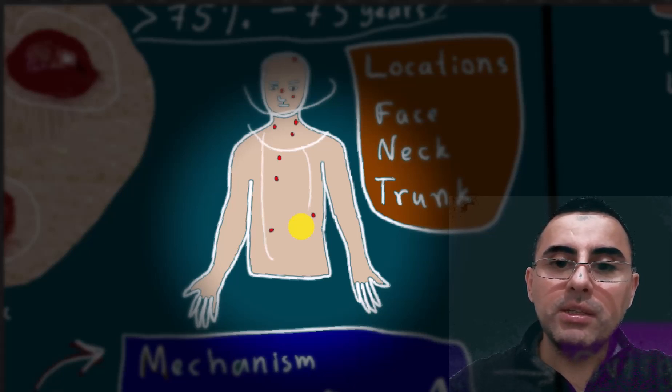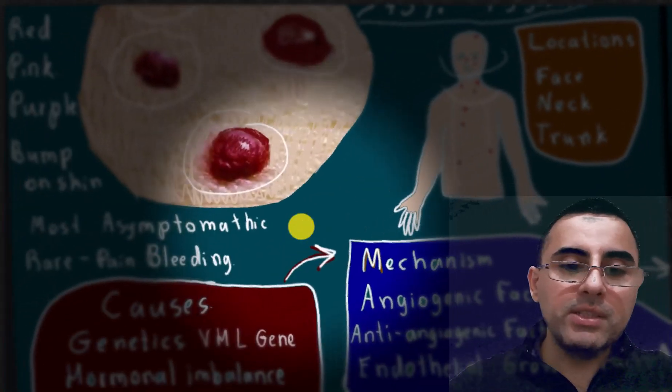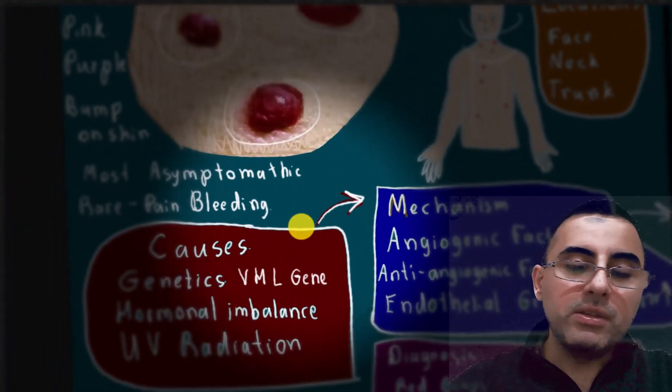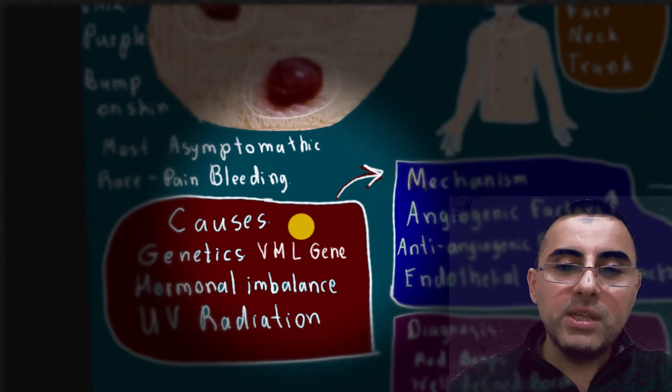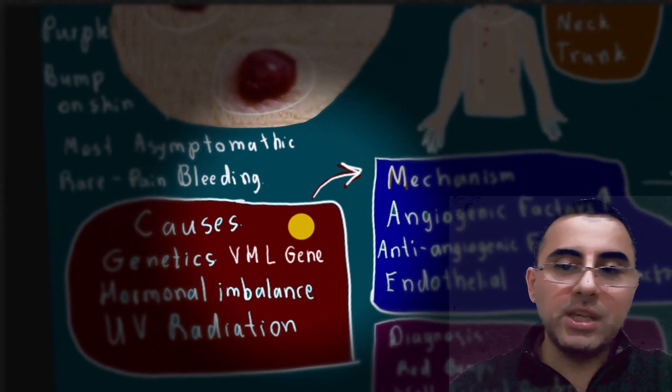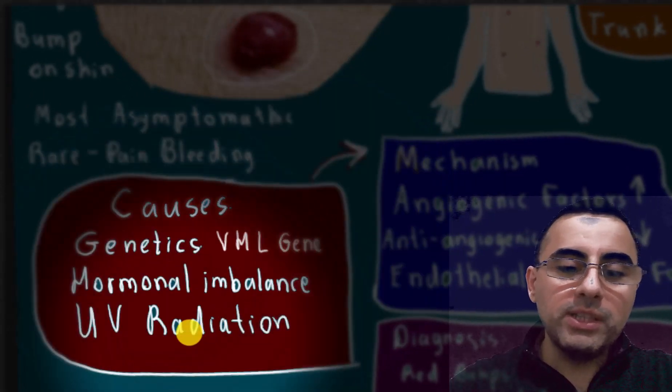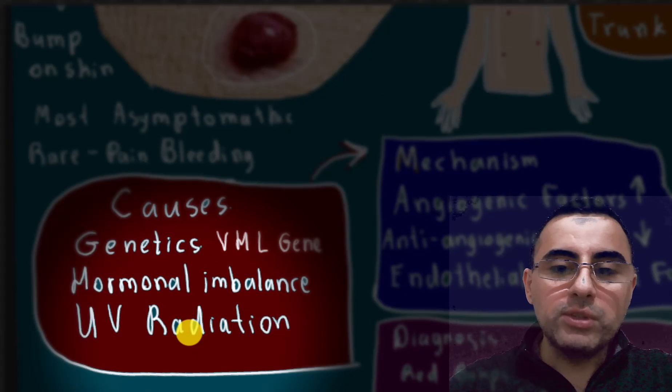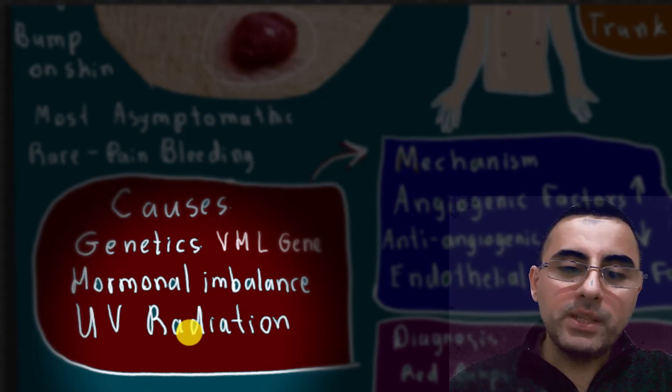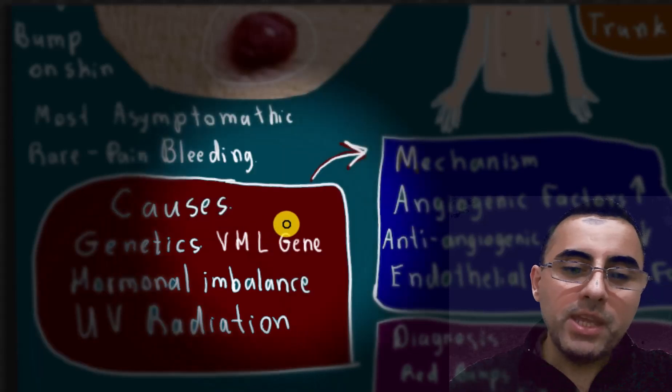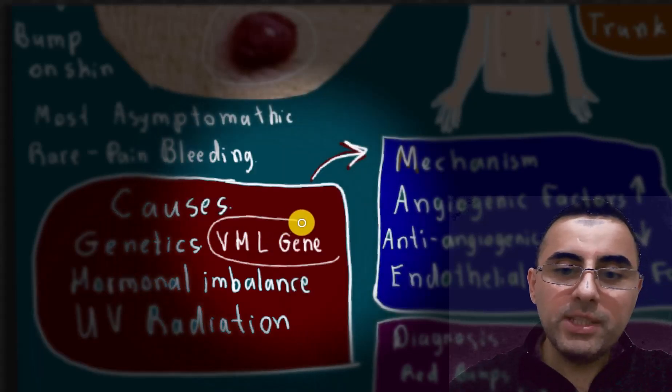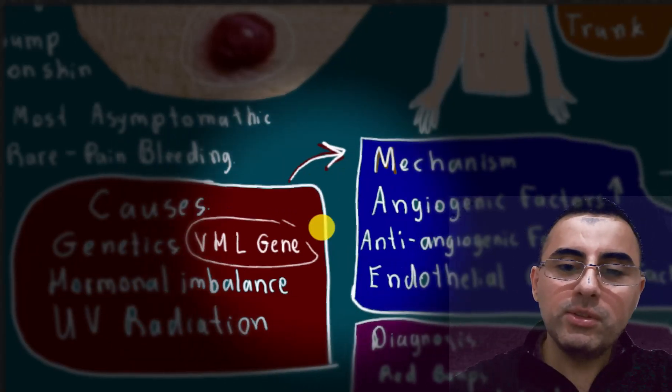For example, in brain, eye, liver, or different organs. The cause is not known. There is no single cause which can cause angiomas. It's genetic, hormonal imbalance, and also ultraviolet radiation has a role. In genetics, the VHL gene is implicated, which is responsible for angiomas.